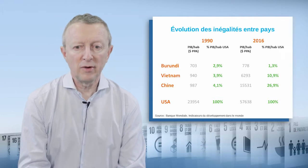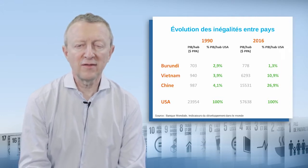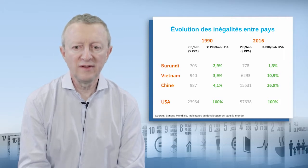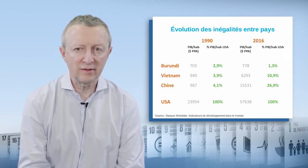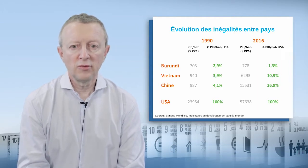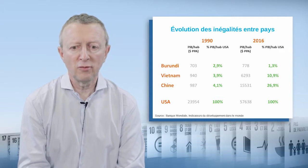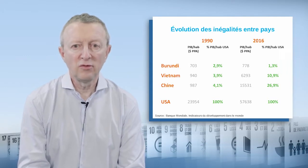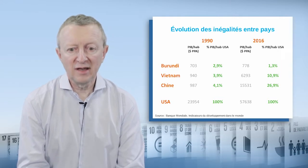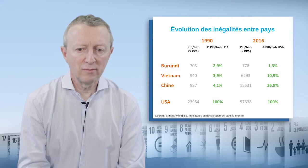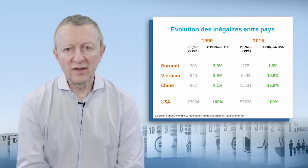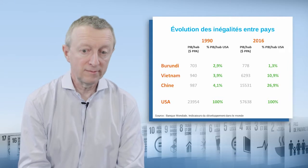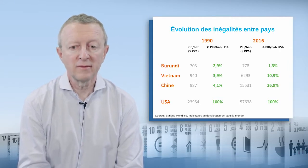This chart shows the evolution of GDP of three developing countries and the US between 1990 and 2016. The figures take into account the differences in prices from one country to another. Burundi, Vietnam, and China in 1990 were among the poorest countries in the world, and the graph shows that they had very different types of evolutions over that time. Inequalities between average living standards in Burundi and the US grew. In 1990, the living standard of Burundi was only 2.9% that of the US, but it fell to 1.3% in 2016.